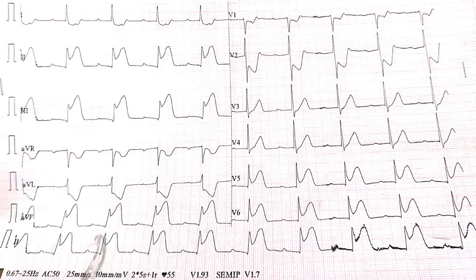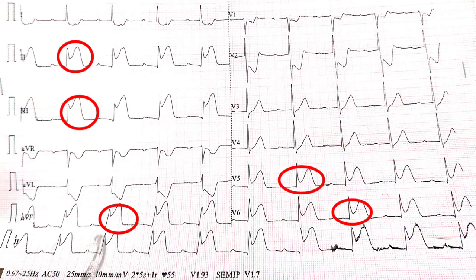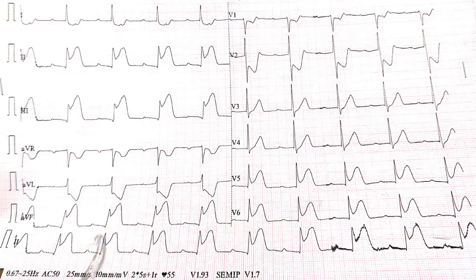QT interval is around 420 ms, which is normal. ST segment elevation in leads 2, 3, AVF, V5, V6, while ST segment depression in leads 1, AVL, V1, V2. T wave is upright.